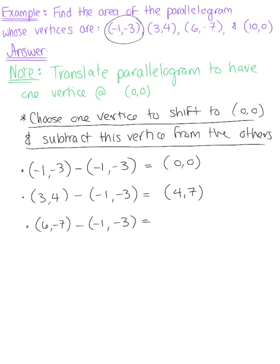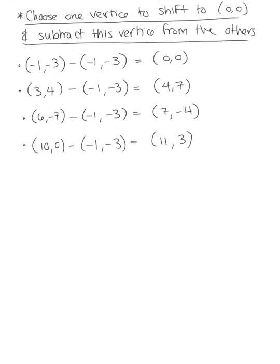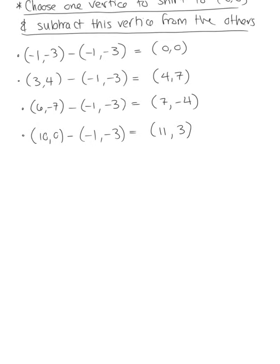We have 6 plus 1 is 7 and -7 plus 3 gives us -4. And then last but not least, we have (10, 0) minus (-1, -3). So 10 plus 1 gives us 11 and 0 plus 3 is 3. So these are our new vertices and we're ready to set up our matrix.